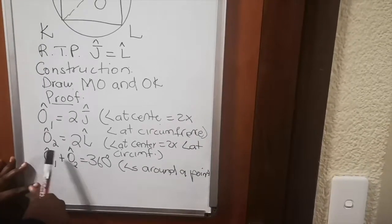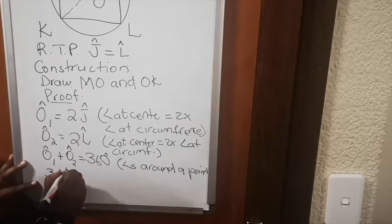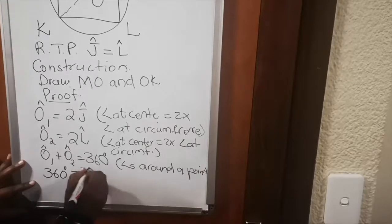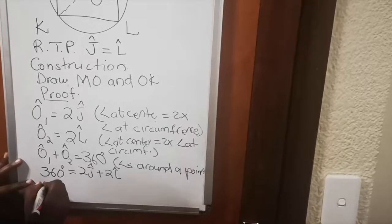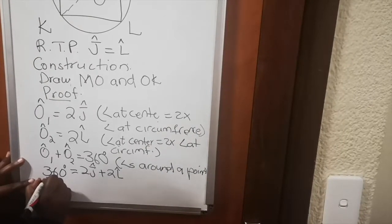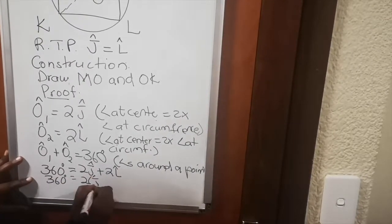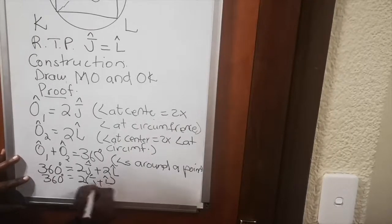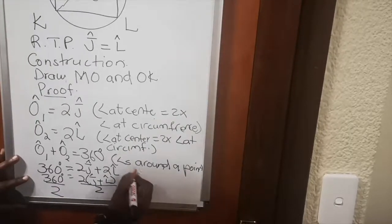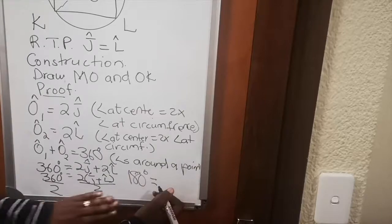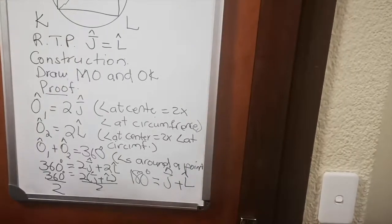So O1 and O2 I can add them. For O1 and O2 I have 360. This equals my O1 was 2J and my O2 was 2L. Then we divide both sides by 2. Then I end up with 180 equals angle J plus angle L. Then your proof is done.